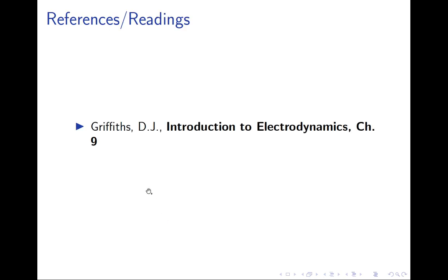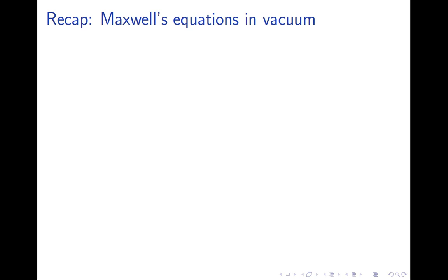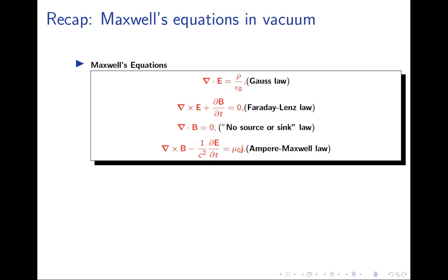The reference for this lecture is Griffiths Chapter 9 on electromagnetic waves. Before that, let's recap last lecture. We wrote down Maxwell's equations in vacuum — originally from Lecture 7 — but it's good to review since this is a central feature of the course. We have four Maxwell's equations: two scalar and two vector equations.